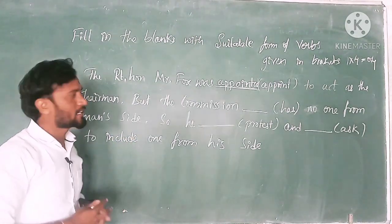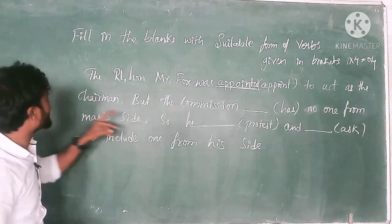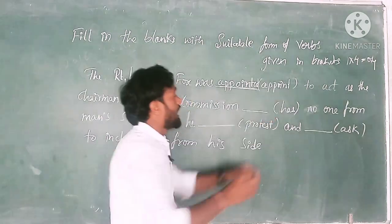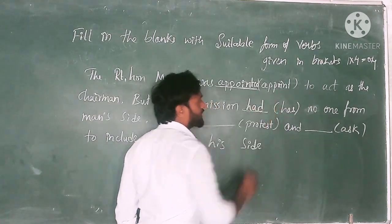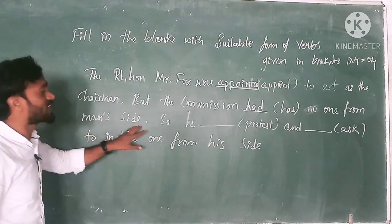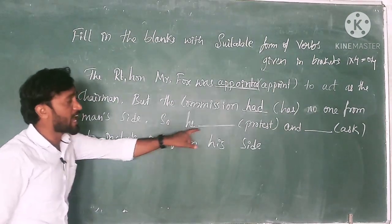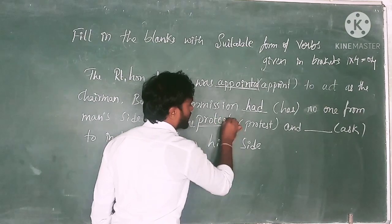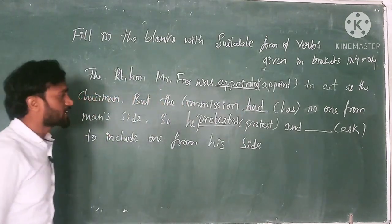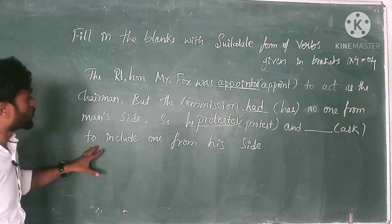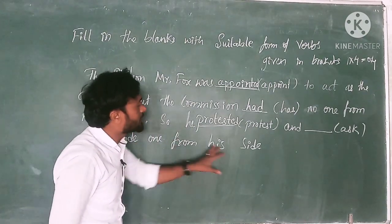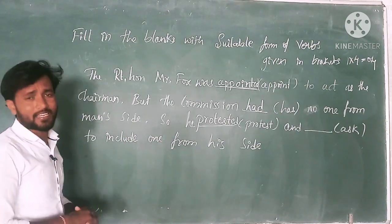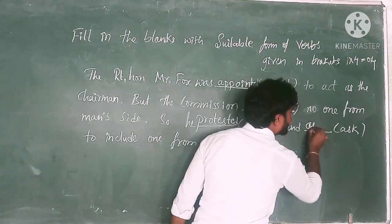Now just add the ED form — that is the past form of the verb. Consider 'appointed': to act as the chairman. The commission 'had' — that's past form. No one from man's side, so he protested. Past form: just add ED. Next, 'asked' to include one from his side.